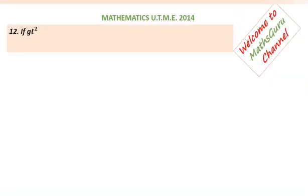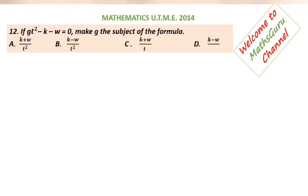Question number 12. If GT square minus K minus W is equal to 0, make G the subject of the formula. The options are provided below. Solution.